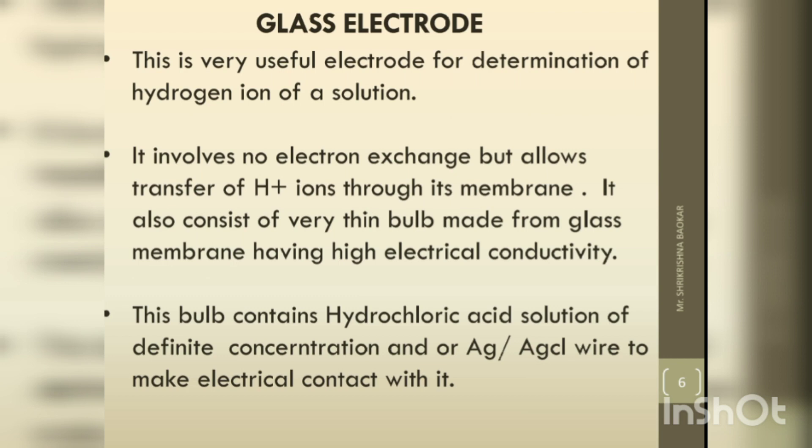It also consists of a very thin bulb made up of a glass membrane having high electrical conductivity. Electrical conductivity means the ability of certain materials to conduct large amounts of electricity. This bulb contains hydrochloric acid solution of definite concentration, such as 0.1 mol, along with an Ag-AgCl wire to make electrical contact.